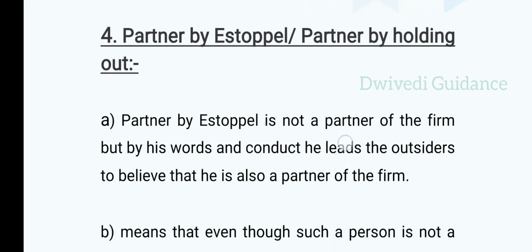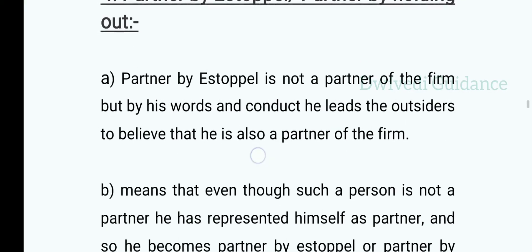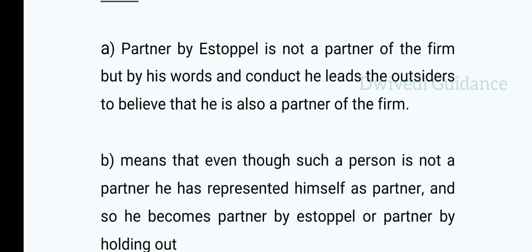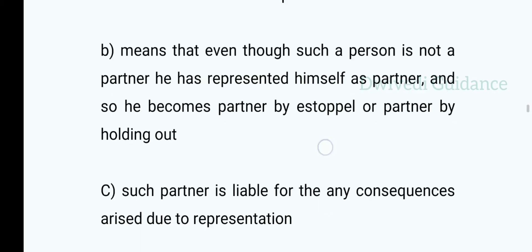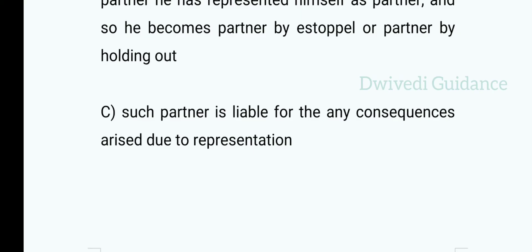Next, partner by estoppel and partner by holding out. A partner by estoppel is not actually a partner of the firm, but by his words and conduct he leads outsiders to believe that he is a partner of the firm. Even though such a person is not a partner, he has represented himself as a partner, and so he becomes a partner by estoppel and partner by holding out. Such a partner is liable for any consequences arising due to that representation.